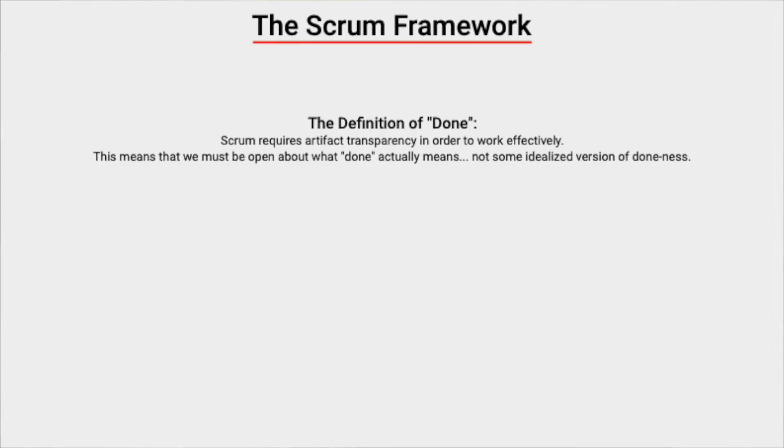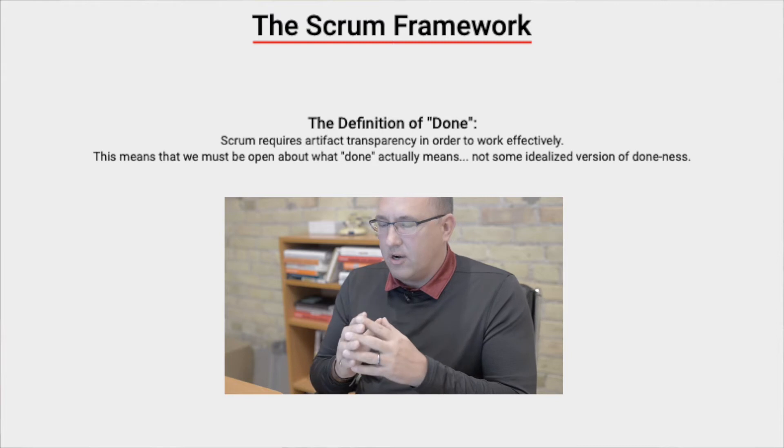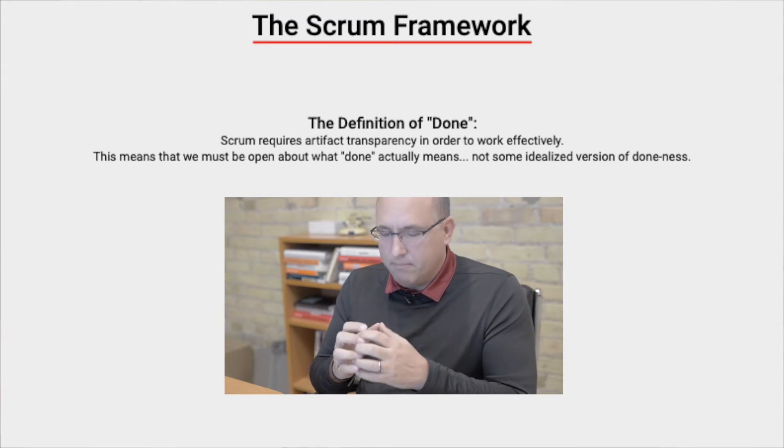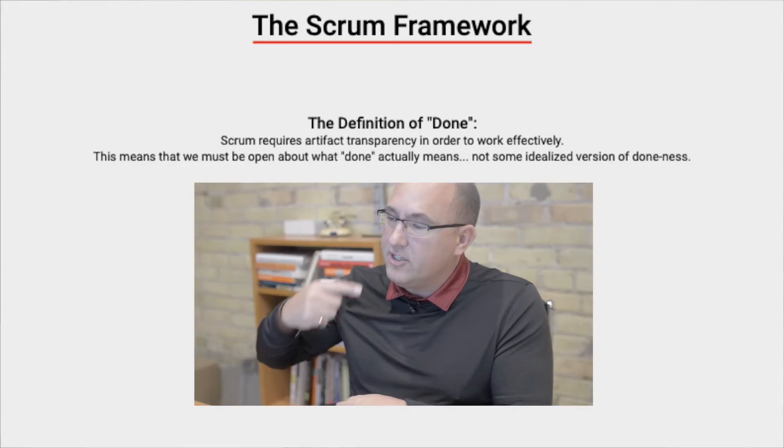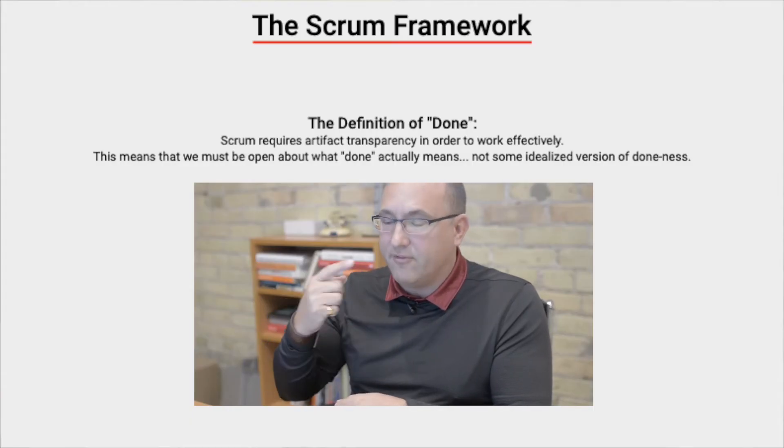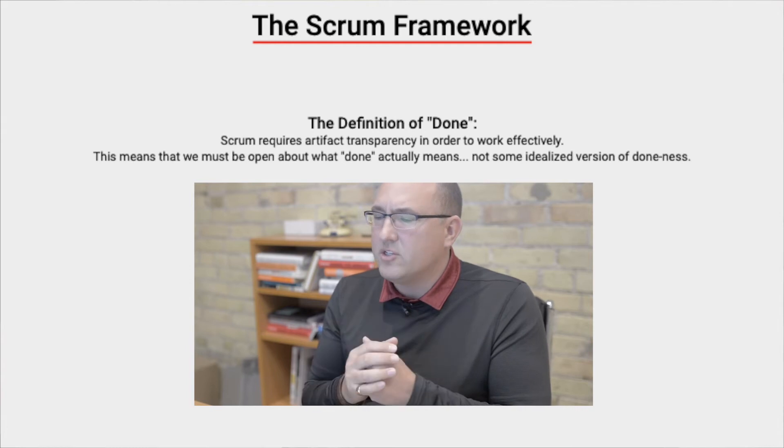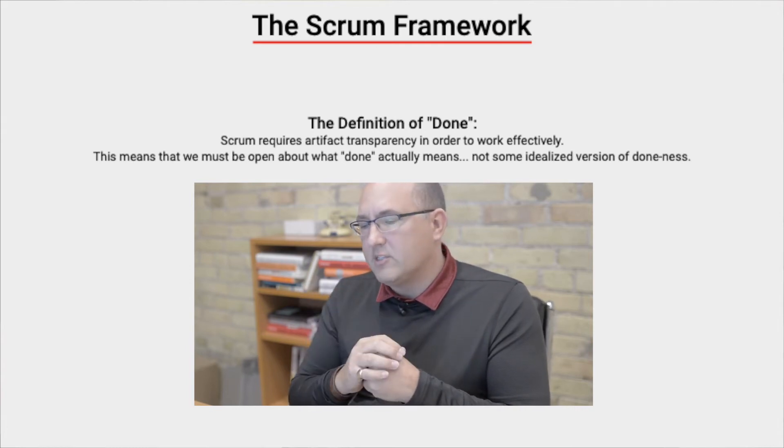Our last major topic around the Scrum framework itself is the Definition of Done. This is a confusing concept that many people misunderstand. The Definition of Done is actually about transparency — Scrum requires our artifacts, and most importantly our product increment, to be transparent in order to work effectively. If we're going to have these short sprints of work and get feedback, we need to really understand what we're looking at.